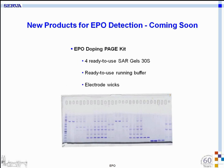There are also new products coming. In our development department pipeline is a precast, ready-to-use gel for Sarkosyl-Lauryl electrophoresis, also with 30 slots for samples.